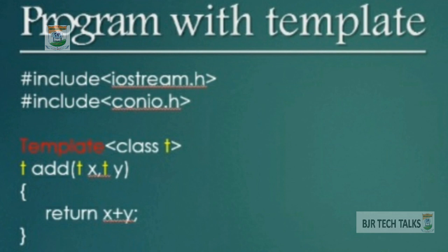Here we give the name T. T is called a placeholder. The type of T depends on the user's sending arguments — that means T acts as an integer data type, float data type, or any data type in C++. It takes values and gives output to us. Here we use template class T, and we define the add function with parameters x and y, returning x plus y.